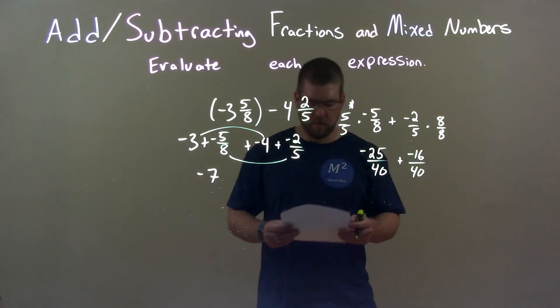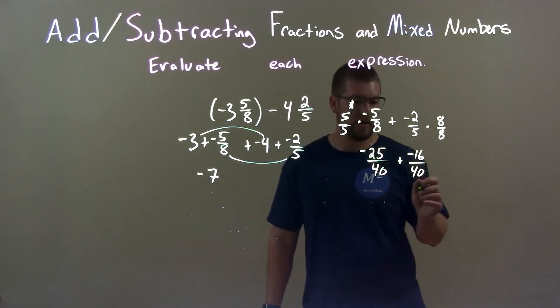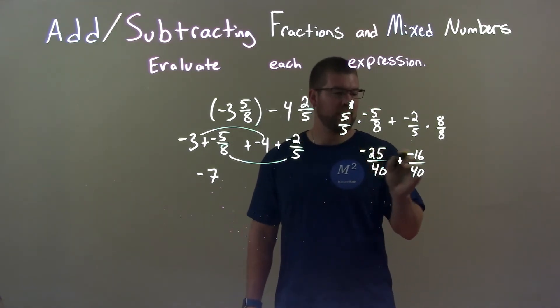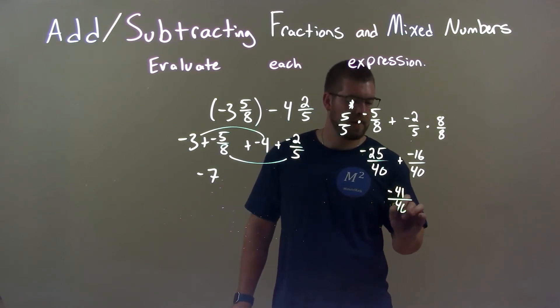Okay, and so we have negative 25 plus negative 16. Well, 1 plus 2 is 3, right? So we have 30, and then the 5 and 6 is 11. So 30 and 11, coming out to be negative 41. So you have negative 41 right here over 40.